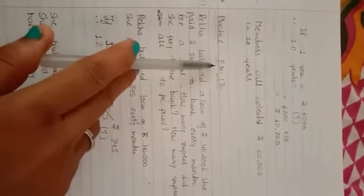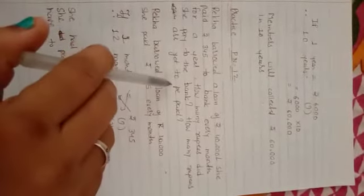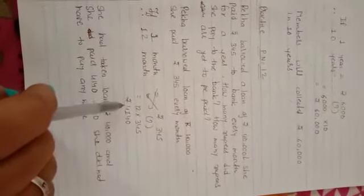Practice problem in page number 12. Rekha borrowed a loan of rupees 40,000. She paid 345 rupees to the bank every month. How many rupees did she pay to the bank in one year? If one month equals 345, then 12 months equals how many? We do cross multiplication. We get rupees 4,140. She had taken a loan of 40,000 and paid 4,140.